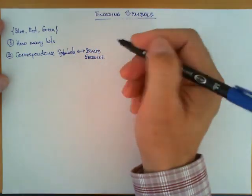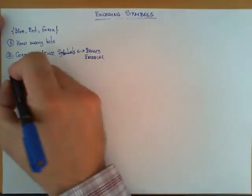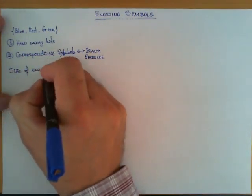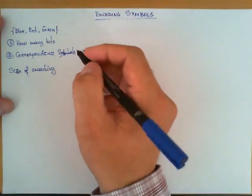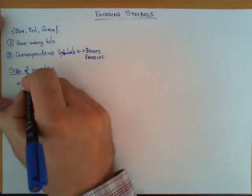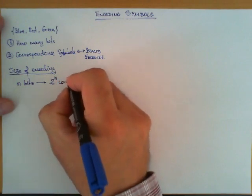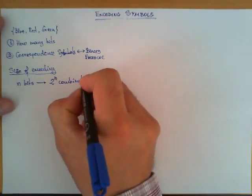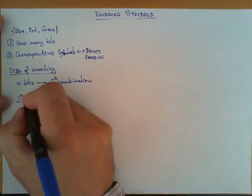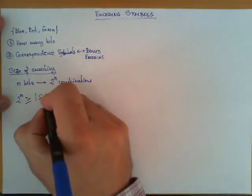Let's follow the example. Suppose this is our set: blue, red and green. The size of the encoding, you have to remember, if I choose to use n bits then with n bits I can have up to 2 to the n different combinations. So we need to make sure that this 2 to the n is at least as big as, if not bigger, the cardinality of my set.